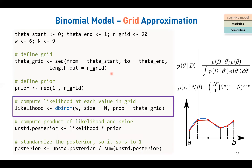For the exercise, go to the folder 'zero tool binomial globe' and run the code. You can change the number of grid points from 20 to 50 for a finer approximation. Try plotting both the unstandardized and standardized posterior — they have the same shape, but the y-axis differs. The standardized posterior has area summing to one; the unstandardized does not. The unstandardized y-axis values are larger.